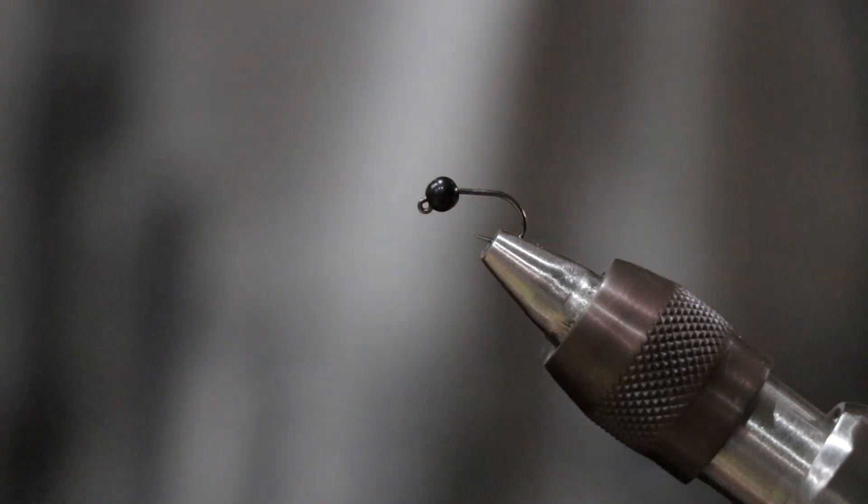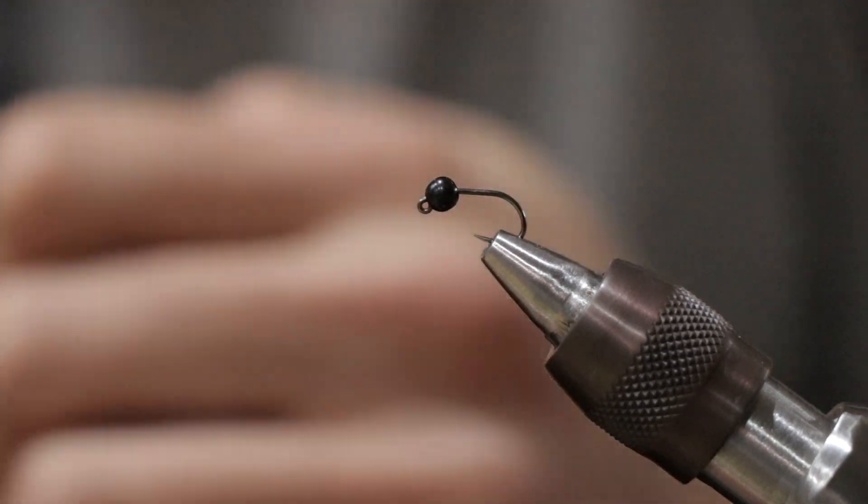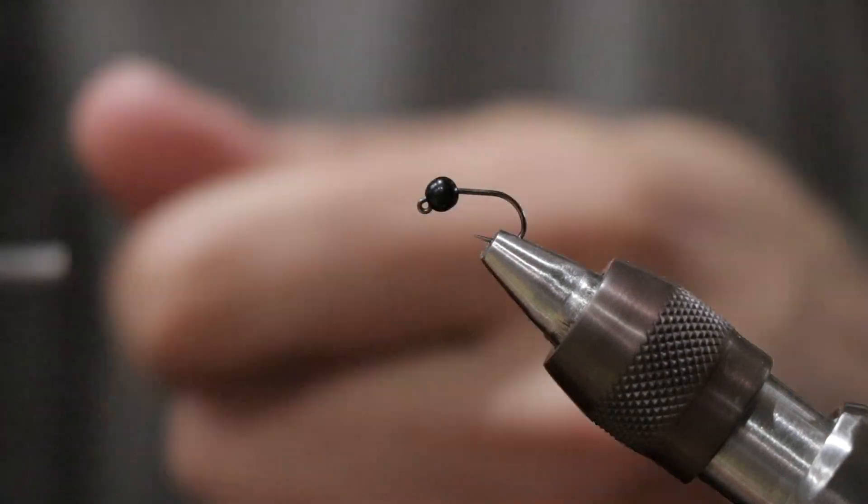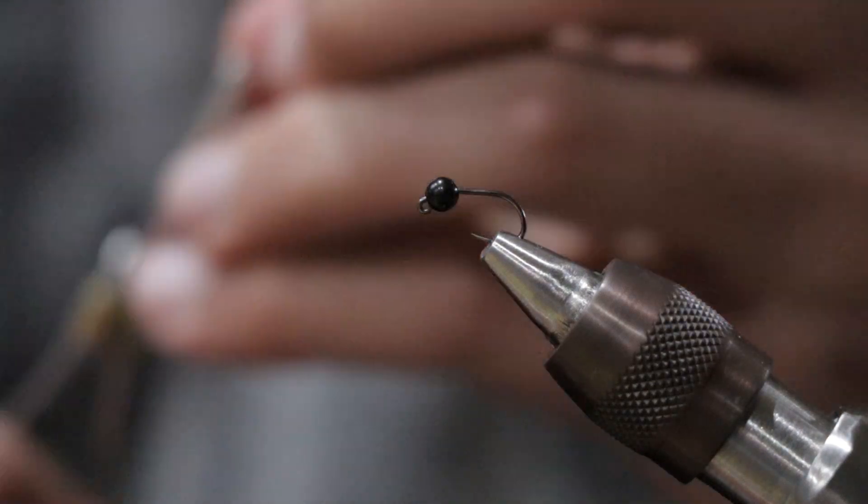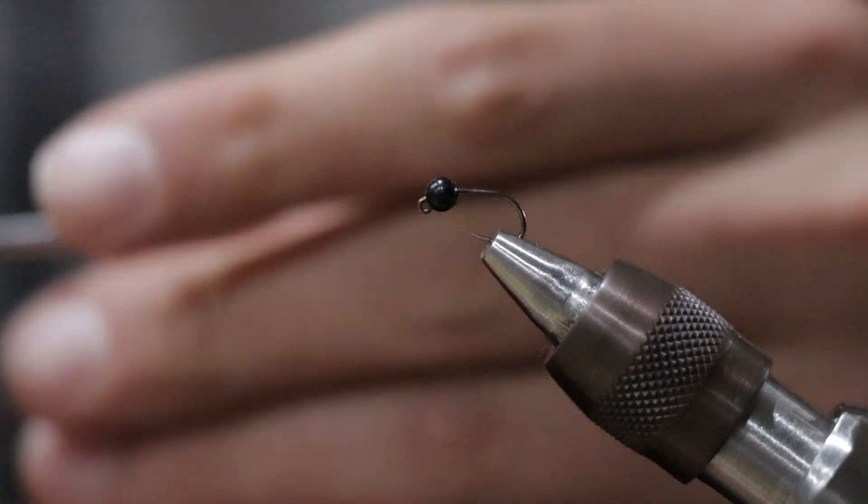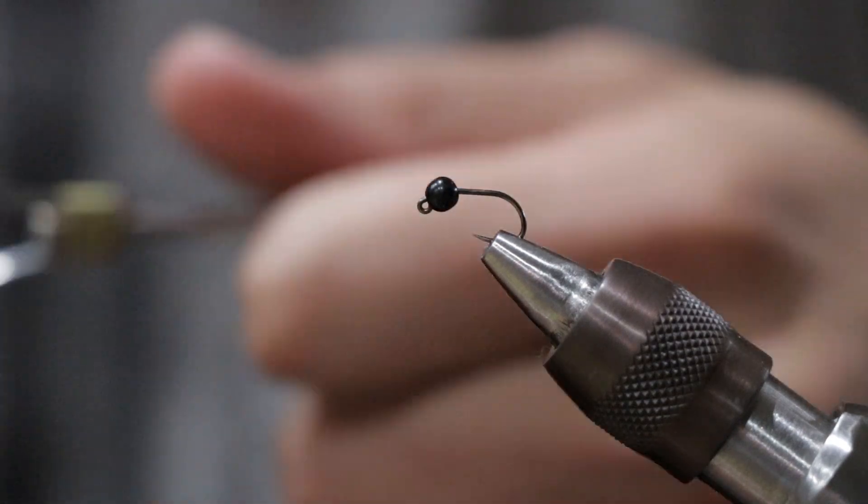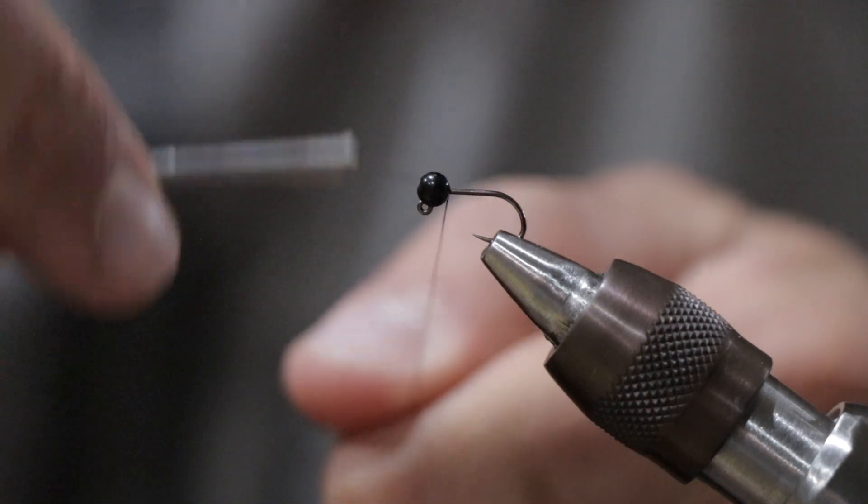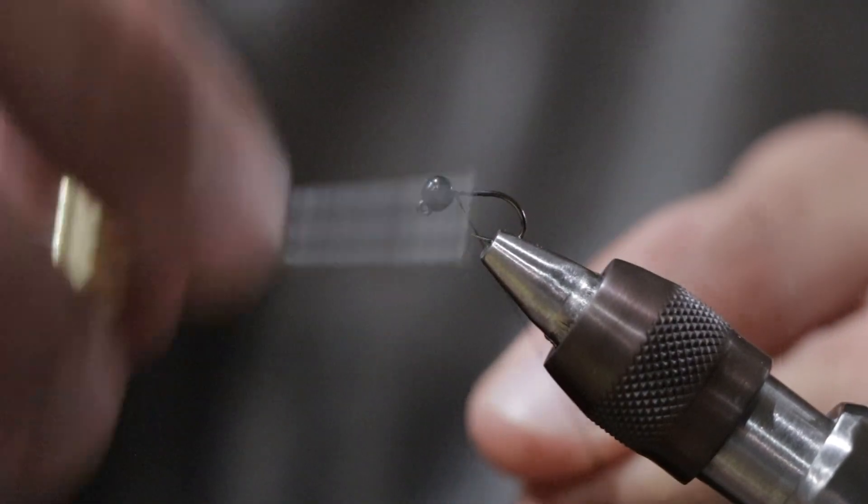Hi everyone, this is John with Front Range Anglers and today we're going to be tying up the Quildegon. In the vise we have a size 14 Fasna F-420 hook, and we're also going to be using a 2.8 millimeter black tungsten slotted jig bead, and then for the thread we're just using some 70 denier UTC in black.